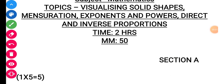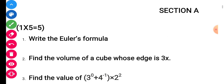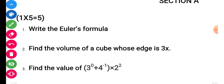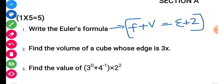Hello my dear students, today I am here with the revision test paper of chapters: Visualizing Solid Shapes, Mensuration, Exponents and Powers, and Direct Inverse Variation. Let's move to Section E. The first question asks you to write Euler's formula. Euler's formula is the relation between faces, vertices, and edges: F plus V is equal to E plus 2.